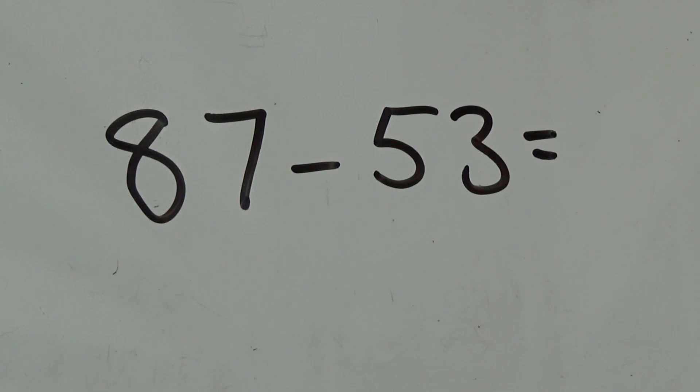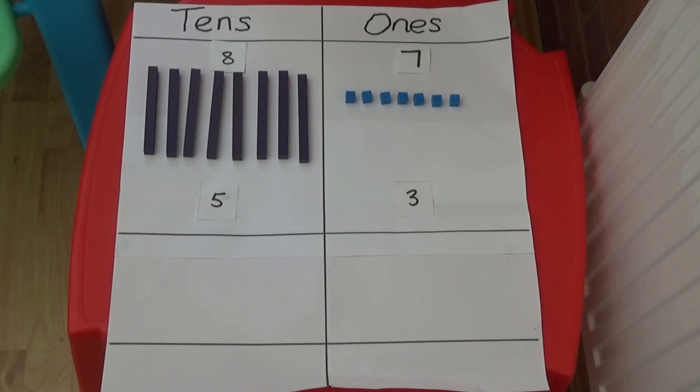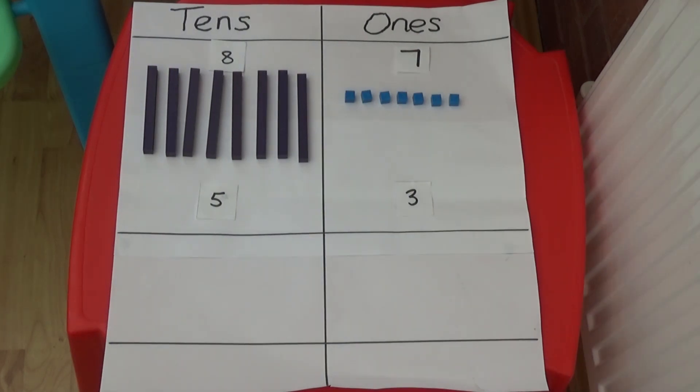First, I'm going to show you how to work out 87 minus 53. I made the number 87 using 8 tens rods and 7 ones cubes. And underneath I have put the number I am subtracting which is 5 tens and 3 ones.